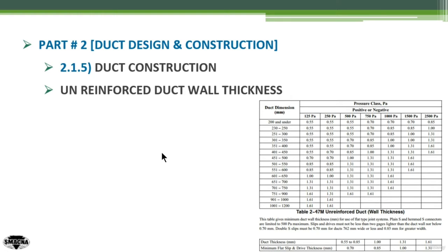To enter this table, you need two inputs: input number one is the duct dimension, and input number two is the pressure classification. The duct dimension represents the row, which you will intersect with the vertical column representing the pressure classification.